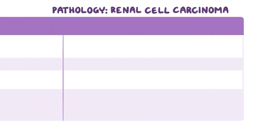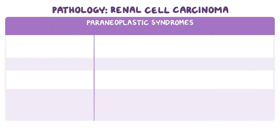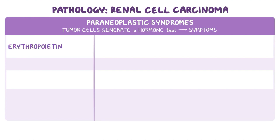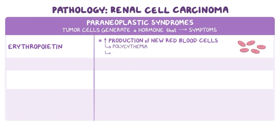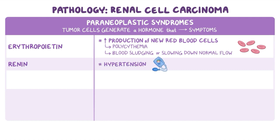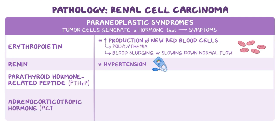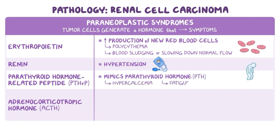Renal cell carcinoma is also frequently responsible for causing various paraneoplastic syndromes, where tumor cells generate a hormone that causes its own set of symptoms. For example, these tumors can release the hormone erythropoietin, which increases the production of new red blood cells, leading to polycythemia, or too many red blood cells, which can cause the blood to start sludging. Another paraneoplastic syndrome involves the release of renin, which causes hypertension. Some other hormones that renal cell carcinomas release include parathyroid hormone-related peptide (PTHRP) and adrenocorticotropic hormone (ACTH). PTHRP mimics parathyroid hormone (PTH), causing hypercalcemia, fatigue, and muscle weakness.